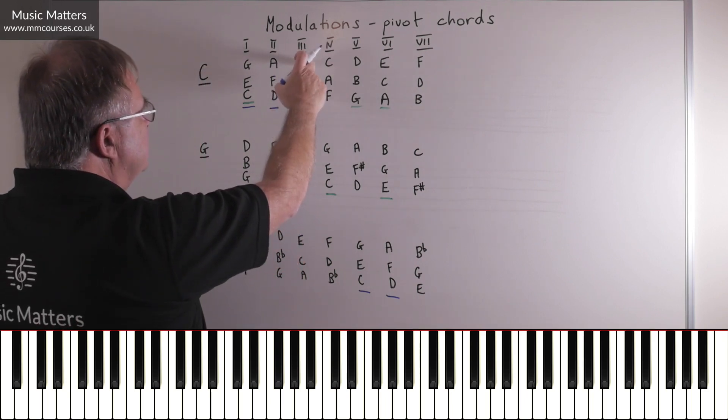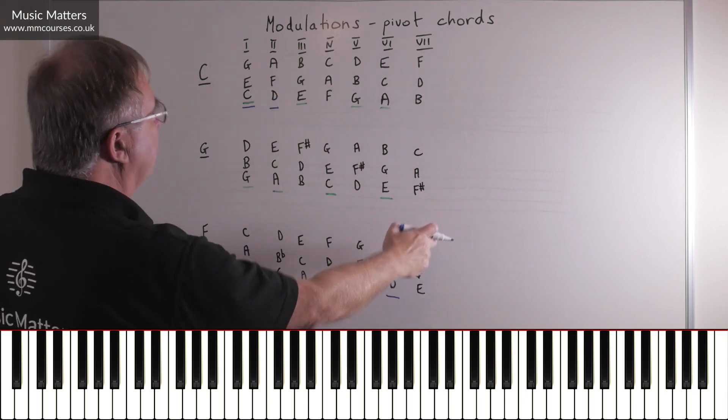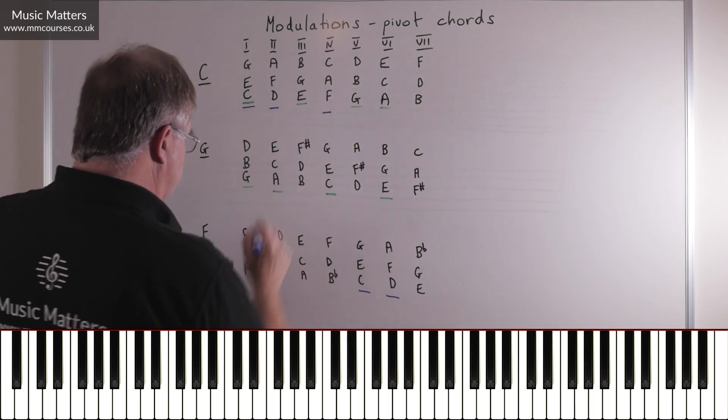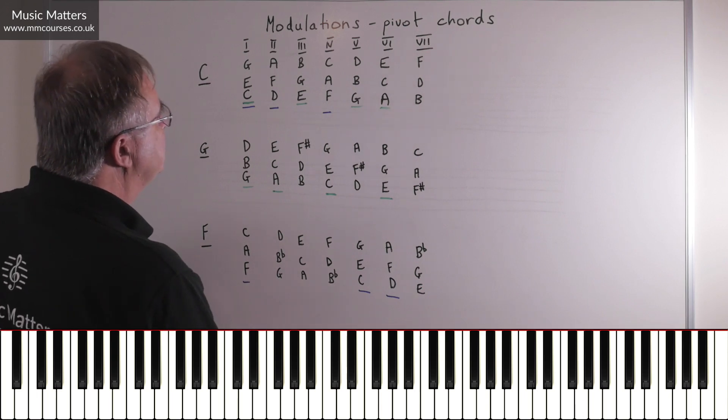III doesn't work because it's got a B natural, and down here we've got a B-flat. You can see here that F A C chord IV in C major is chord I in F major, so that's a good one.